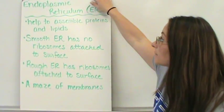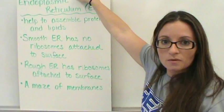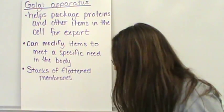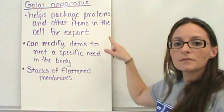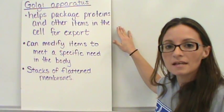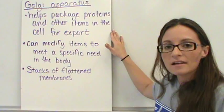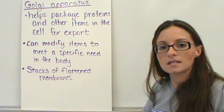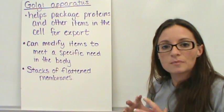And I will show you a picture of that in just a minute. So we have ribosomes, then the endoplasmic reticulum, and finally we have the Golgi apparatus. And the Golgi apparatus takes and helps to package the proteins and any other substances that need to either be